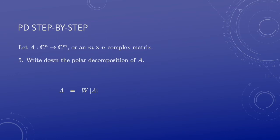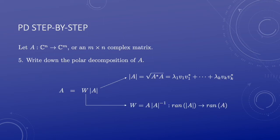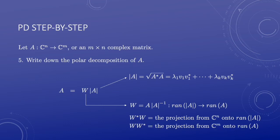Finally, the polar decomposition of A is W times the polar of A. The polar of A has the spectral decomposition as a weighted sum of projections. W is a partial isometry from the range of the polar of A onto the range of A. It is helpful to check that W star W is the projection onto the range of the polar, and W W star is the projection onto the range of A.